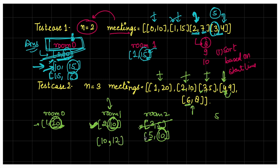Finally, we return the room that held the most meetings. Two rooms held the same number of meetings, so we return the lowest room number — which is room 1. The answer for this test case is 1.